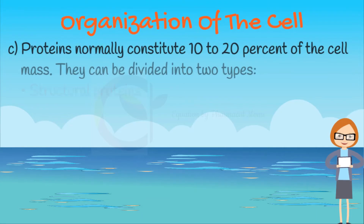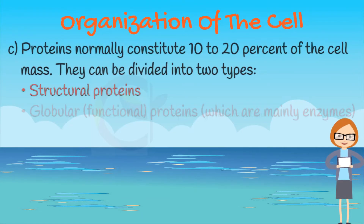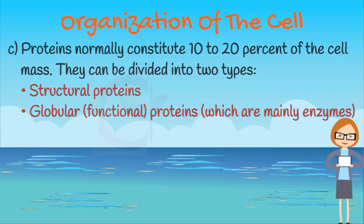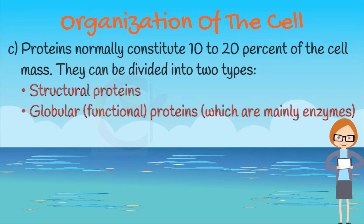Proteins normally constitute 10–20% of the cell mass. They can be divided into two types: structural proteins and globular or functional proteins, which are mainly enzymes.